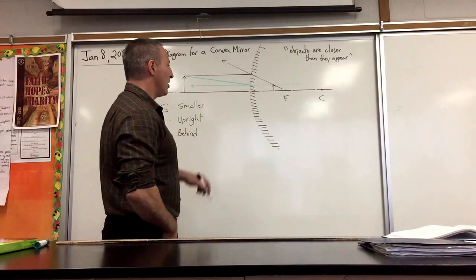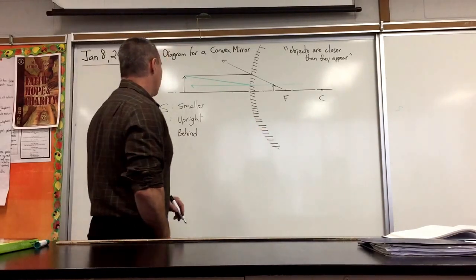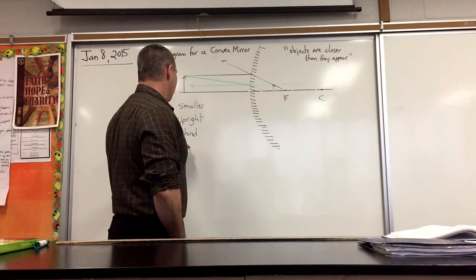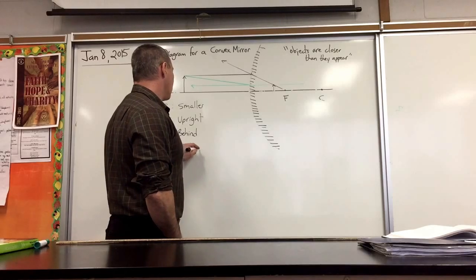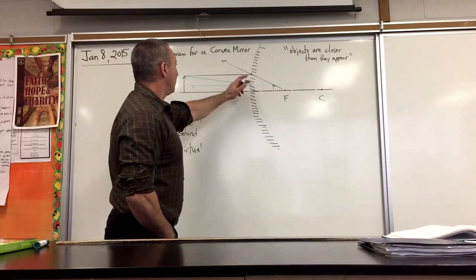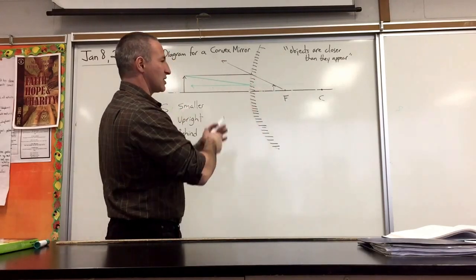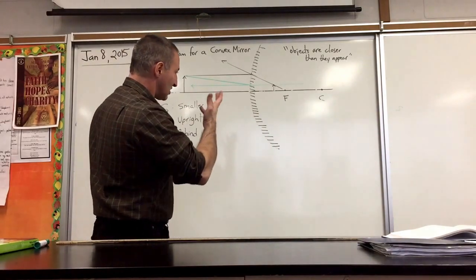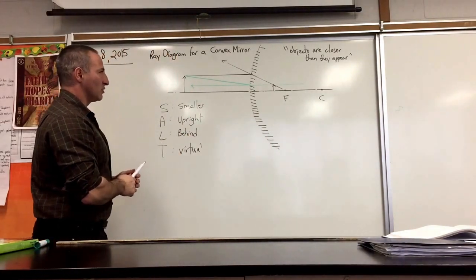The image appears to be coming from behind the mirror. Finally, the type is virtual. You cannot project a virtual image because the reflected rays are diverging. You can't focus them on anything. They go outwards. You can see them, but you can't focus them onto a screen.